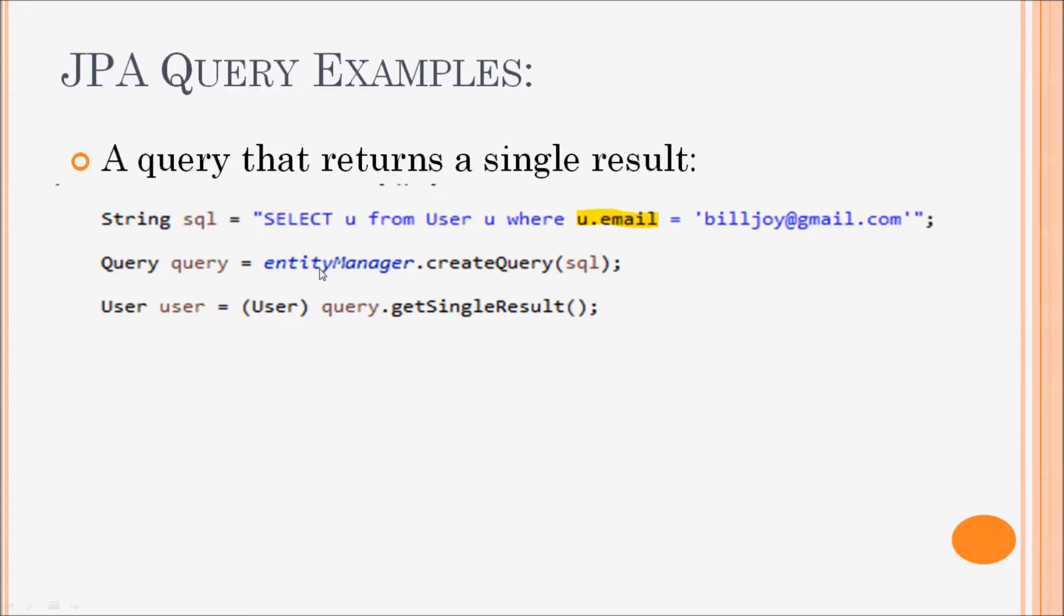And the next statement creates a query object from the query string, and with single result it executes the query and returns a single result such as an integer value, a string, or an object.